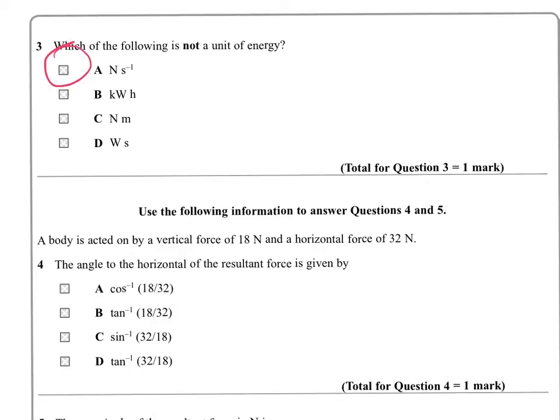A body is acted on by a vertical force of 18 newtons and a horizontal force of 32 newtons. The angle to the horizontal of the resultant force is given by one of these options.